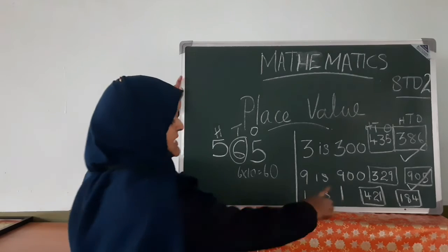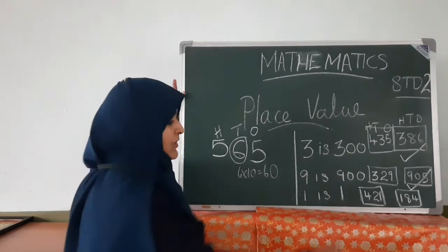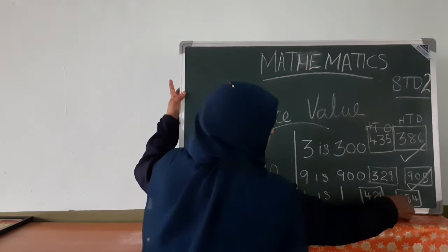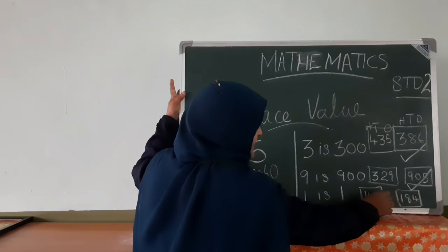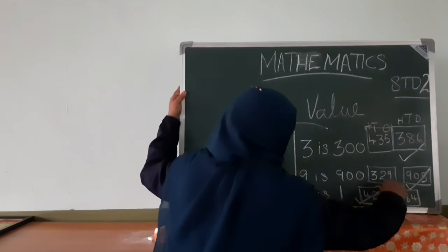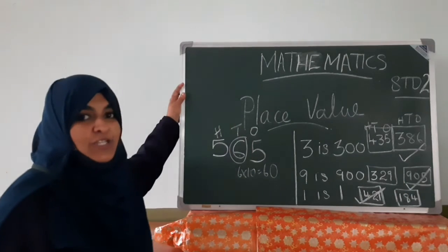In which number one is in one's place? Check. In this number, one is in one's place. So, the number is four hundred twenty-one.